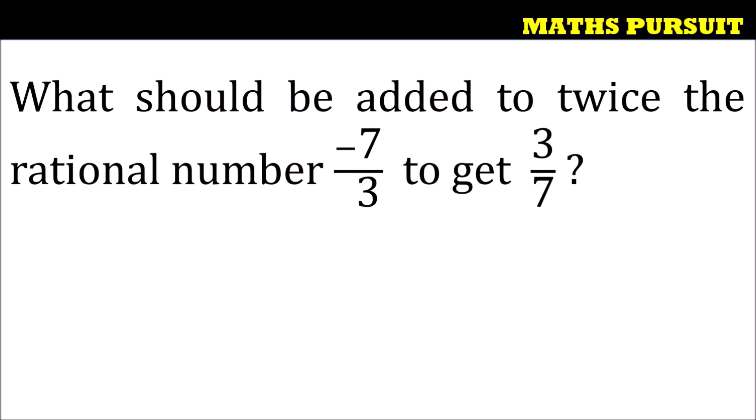The given question is: what should be added to twice the rational number minus 7 upon 3 to get 3 upon 7? So let us see how we can solve this question.